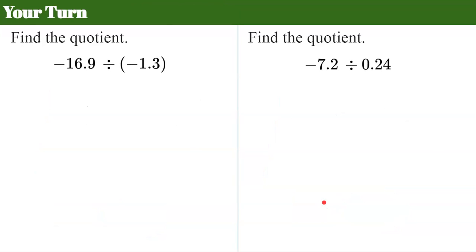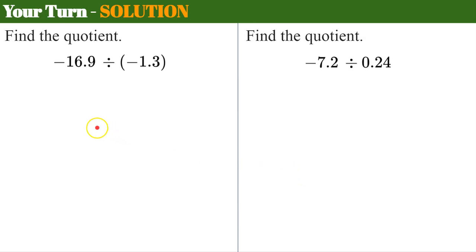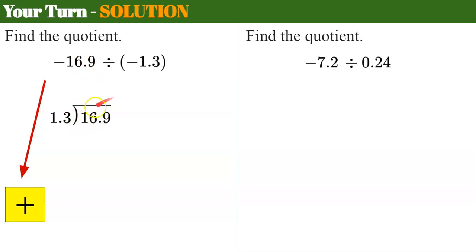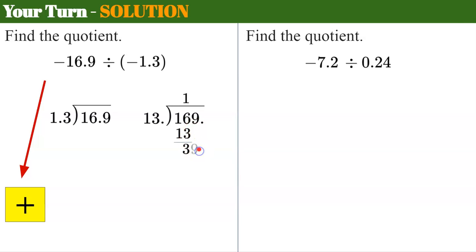Now it's your turn. Pause, find the quotient, and come back and hit play when you're done. Welcome back — let's make our plan. I have a negative divided by a negative, which tells me I have a positive quotient because they have the same sign. Setting up my long division: 16.9 divided by 1.3. Move the decimal one to the right to get 13. 13 goes into 16 once. 1 times 13 is 13. 16 minus 13 is 3. Bring down the 9. 13 goes into 39 three times. 3 times 13 is 39. Remainder 0, so my quotient is positive 13.